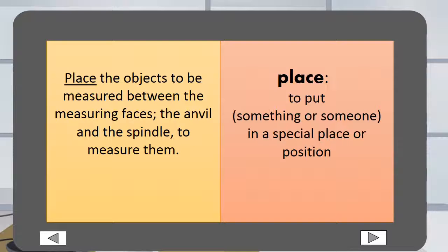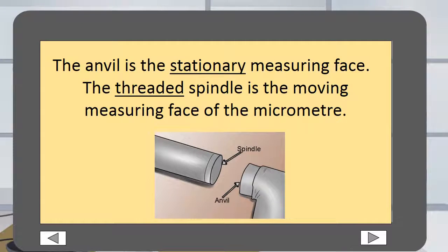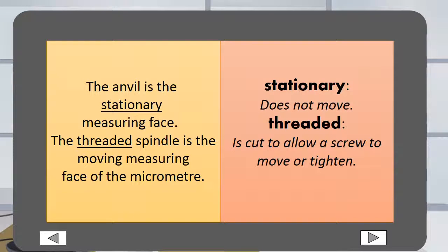Place means to put something in a special place or position. The anvil is the stationary measuring face. The threaded spindle is the moving measuring face of the micrometer. Stationary means it does not move. Threaded means it is cut to allow a screw to move or tighten.